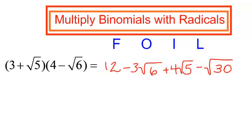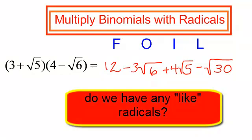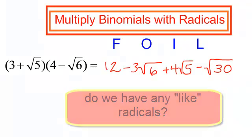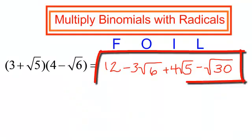The question is, am I done? Do I have any of these radicals that can be simplified, that can be broken down? No. Do I have any like terms that I can combine? No. This is your answer: 12 minus 3 radical 6 plus 4 radical 5 minus radical 30.